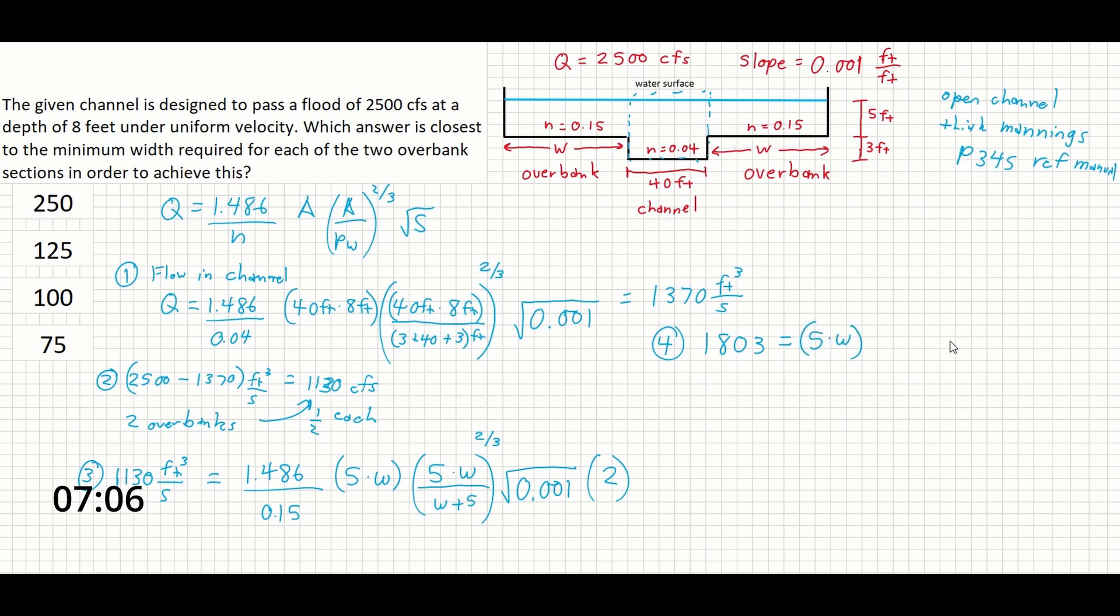We should get 18.03 equals 5 times W, 5 times W, over W plus 5 to the 2 thirds, which if you want to rewrite that one more time, you could say 5 times W to the 5 thirds, over W plus 5 to the 2 thirds, equals, is supposed to equal 18.03. So at this point, the way to do this is to test your answers.